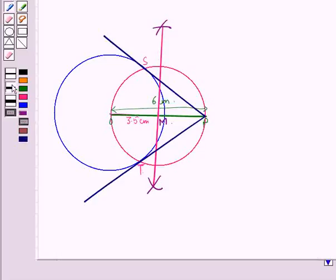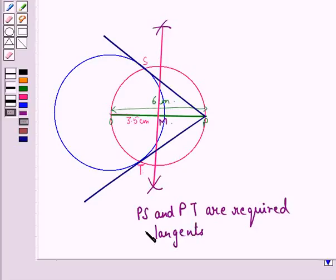PS and PT are the required tangents from point P outside the circle at a distance of 6 cm from the center of the circle.